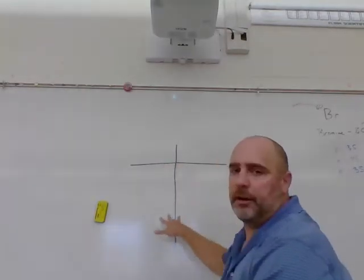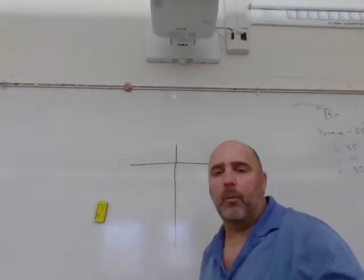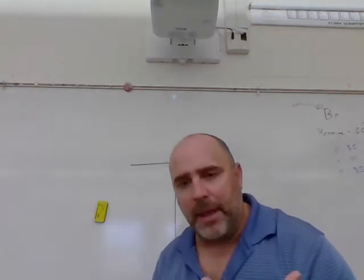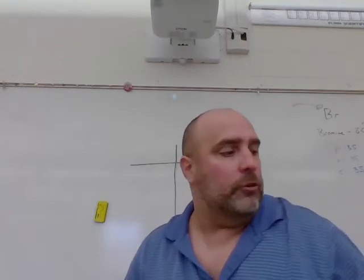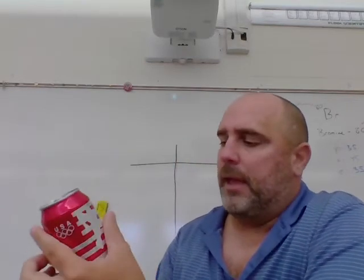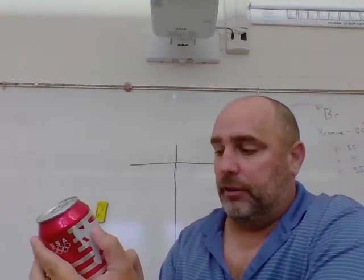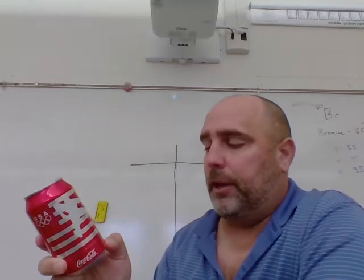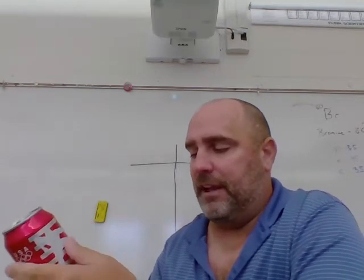I have my example of the T-chart here, and I want you to get five measurements of things that come in two different units. So for instance, here is a can of Coke, and if I read the label, it says 12 fluid ounces, and it also says 355 milliliters.